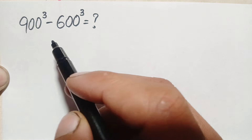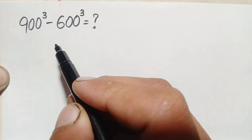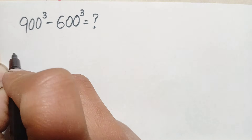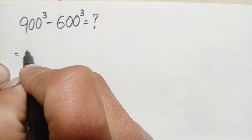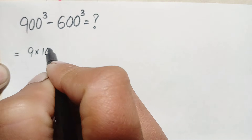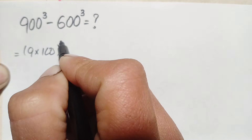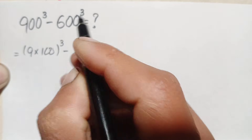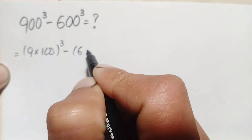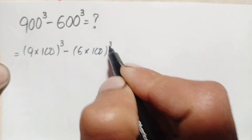In the first method, we will try to factorize the two bases 900 and 600. So we can write 900 as 9 times 100, raised to the power 3, minus 600 written as 6 times 100, raised to the power 3.